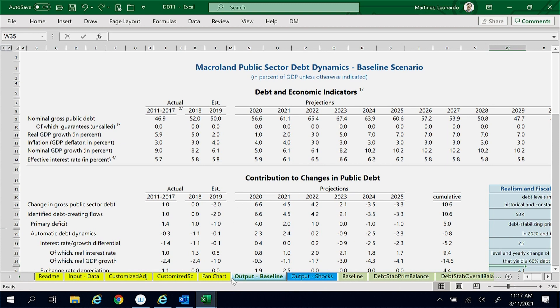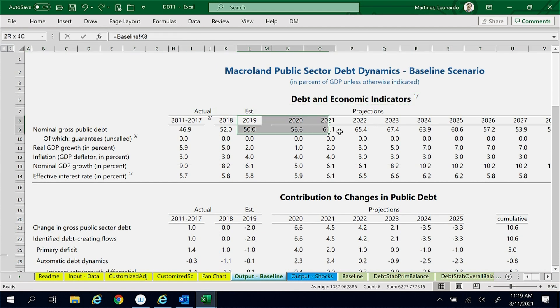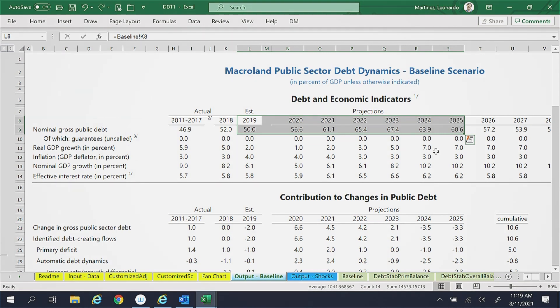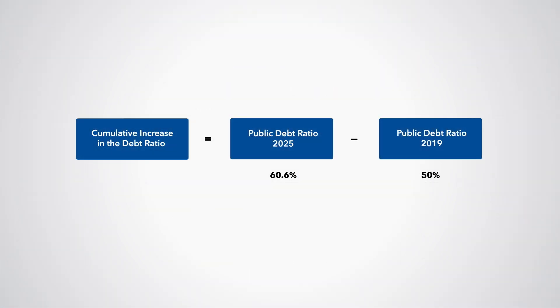The Output Baseline Worksheet presents the baseline debt projections. Note in the top table that the public debt ratio is projected to increase from 50% of GDP in 2019 to 60.6% of GDP in 2025, implying a cumulative increase in the debt ratio of 10.6% of GDP.